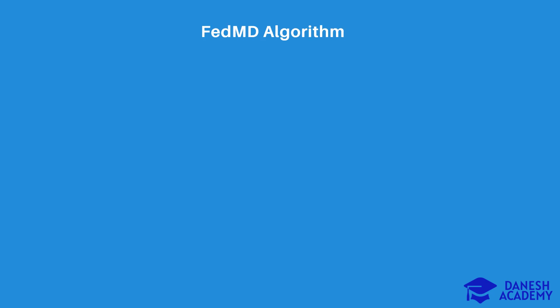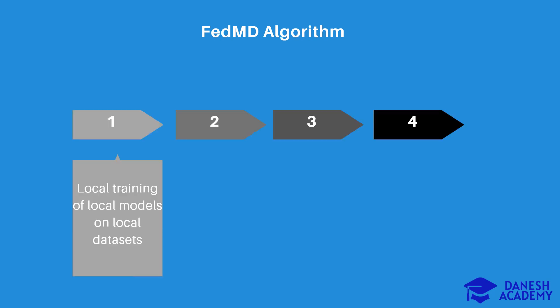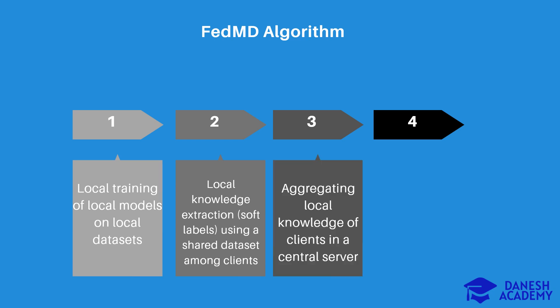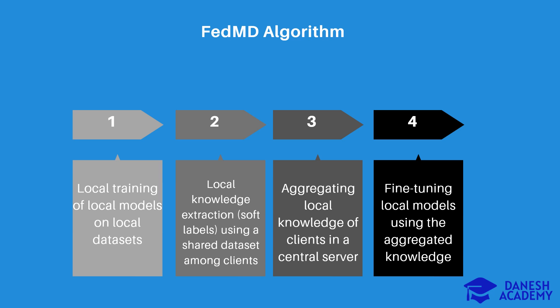Here we introduce the first federated knowledge distillation work, called FedMD. It has four main steps in each round. First, local models are trained on local datasets in edge devices. Then, local predictions are calculated for each local model using a shared dataset — these predictions are soft labels representing the local knowledge of clients. After that, the set of local knowledge from all clients is aggregated in the server to achieve a global knowledge, which is a set of aggregated soft labels. These aggregated soft labels are sent back to clients, and local models are fine-tuned using the shared dataset and these aggregated soft labels as ground truth. This process is repeated for multiple rounds to obtain a predefined convergence rate.